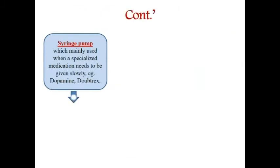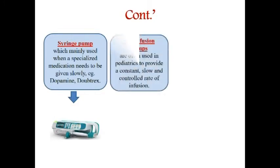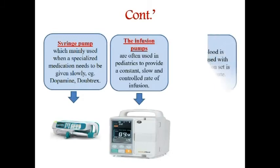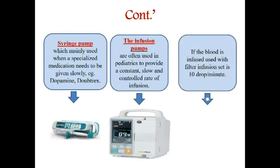The syringe pump is mainly used when specialized medication needs to be given slowly, such as dopamine. Infusion pumps are often used in pediatrics to provide a constant, slow, and controlled rate of infusion. When blood is infused, a filter infusion set is used, with a drop factor of 10 drops per minute.